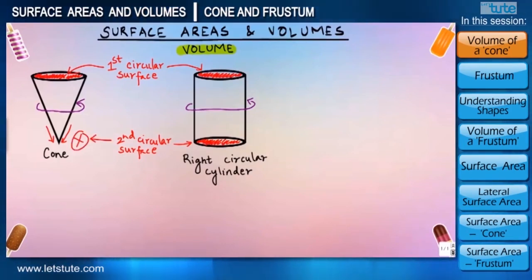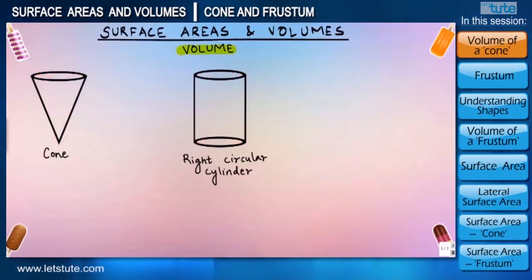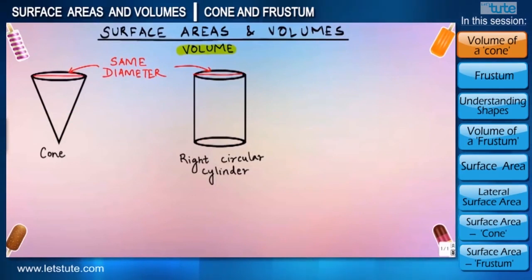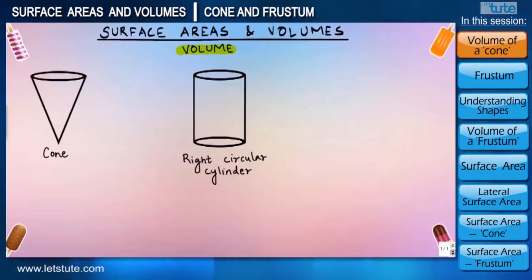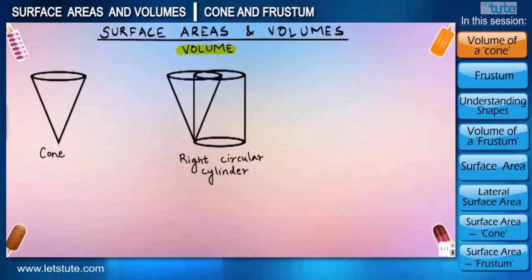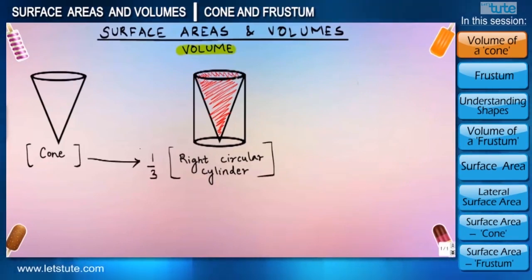So we can try to learn volume of a cone with the help of a cylinder. Suppose in both these shapes we try to keep two parameters same: first the diameter and second the height. Next thing we try to do is to fit the cone into that cylinder.